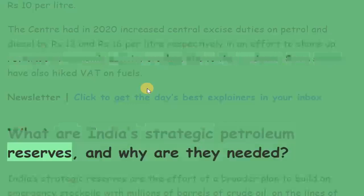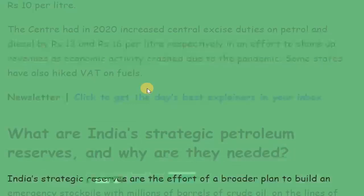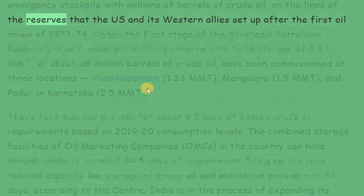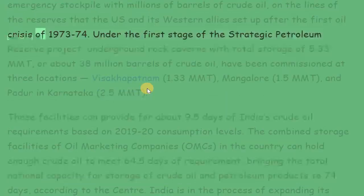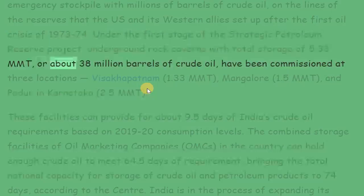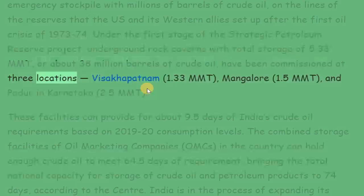What are India's strategic petroleum reserves and why are they needed? India's strategic reserves are the result of a broader plan to build an emergency stockpile with millions of barrels of crude oil, on the lines of the reserves that the US and its Western allies set up after the first oil crisis of 1973–1974. Under the first stage of the strategic petroleum reserve project, underground rock caverns with total storage of 5.33 MMT, or about 38 million barrels of crude oil, have been commissioned at three locations.